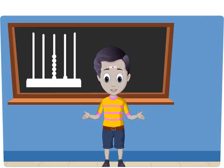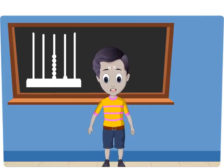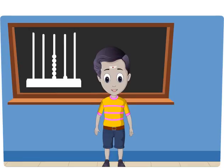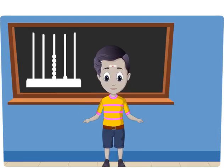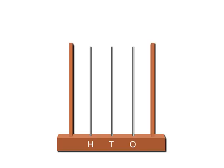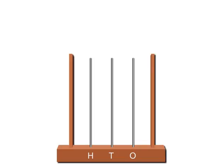This is an abacus. It is used for counting. Numbers are shown on a spike abacus as follows: 1 one is shown on the abacus, and 10 ones, or 1 ten, is shown on the abacus. Let us read the spike abacus and write the numbers.